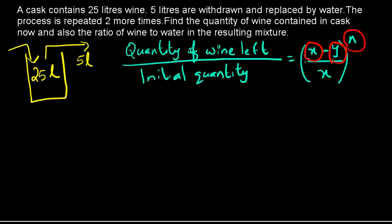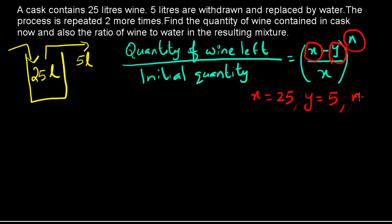All three parameters are given here. x = 25, since the cask contains 25 details of wine. y = 5, since 5 details are withdrawn and replaced by water. And n = 3, since the process is done once and then repeated 2 more times, giving a total of 3 times.